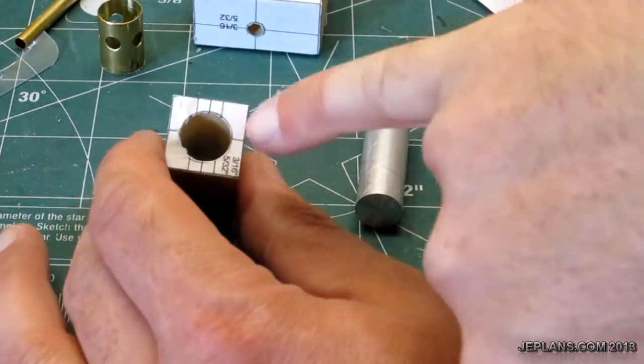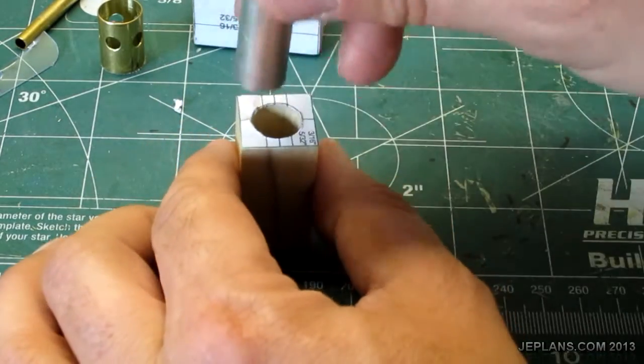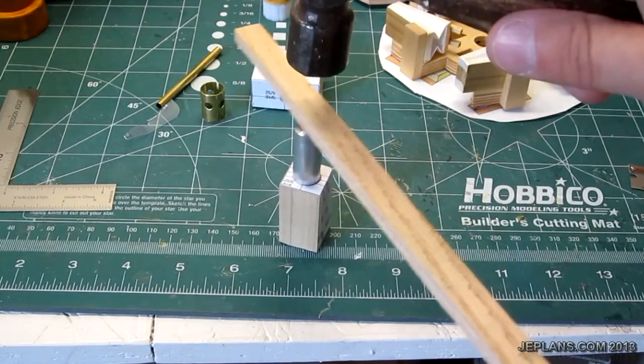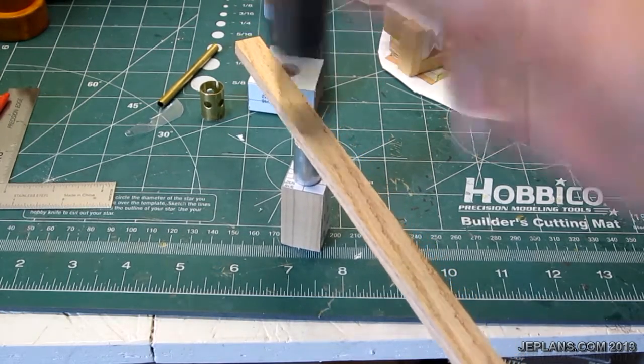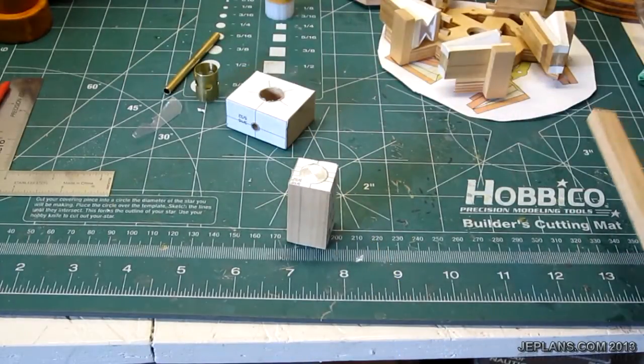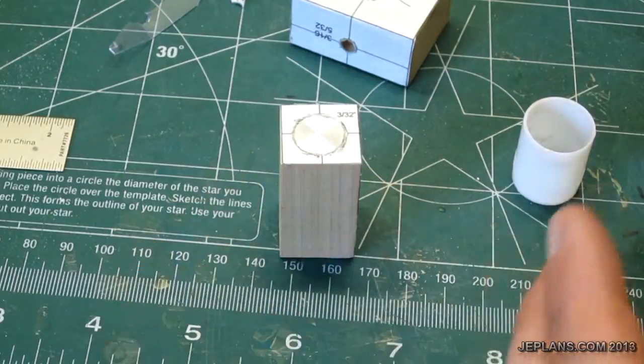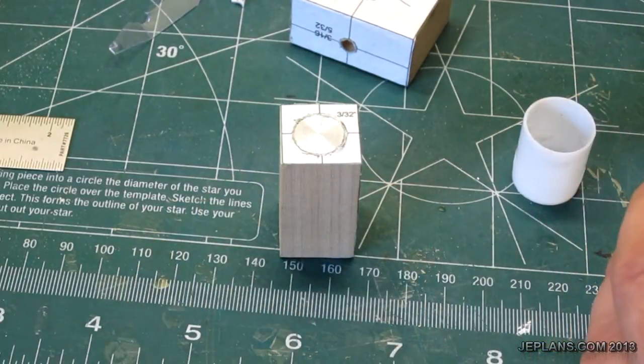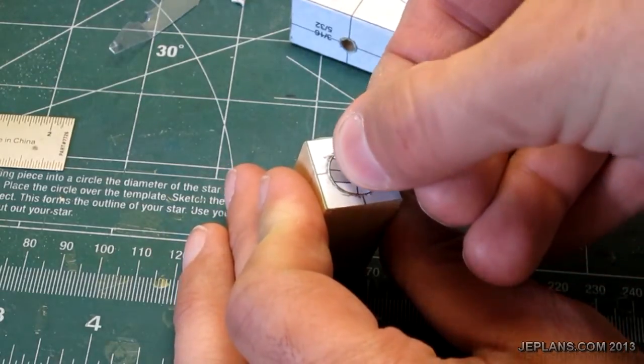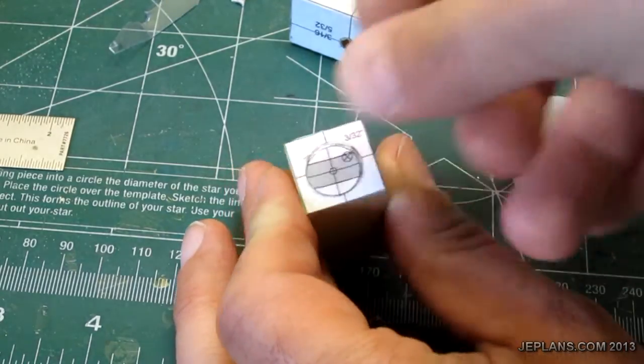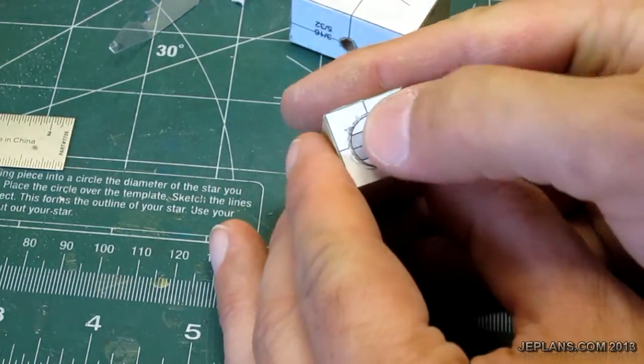I have the hole drilled out to put the shaft in. For the end to mark where I'm going to drill my holes, I'm literally just temporarily gluing this on to the end. I only need it to stay on long enough to mark where the holes are going to be.